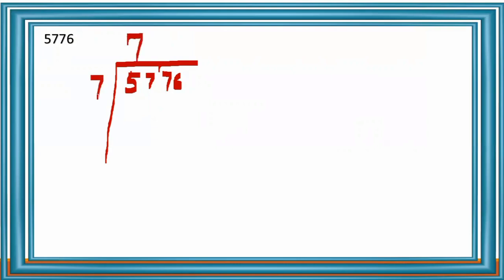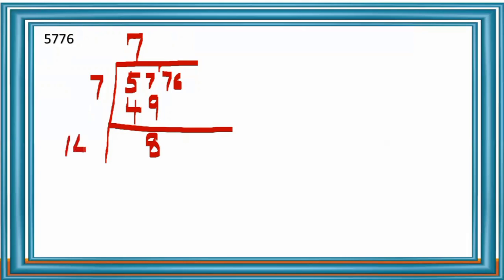Write 7 in the quotient place and also in the divisor place. 49 below 57. Then 57 minus 49 is 8. Double the divisor: 7 × 2 = 14. Leave a blank at the right side of 14. Bring down the next two digits: 76, giving remainder 876.